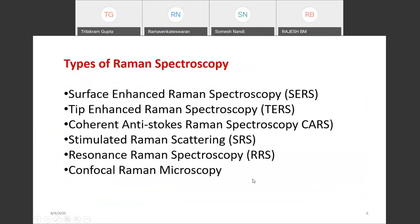There are a few types of Raman spectroscopy. One is surface-enhanced Raman spectroscopy, SERS, which offers orders of magnitude increase in Raman intensity, since the Raman signal is very weak. To enhance the Raman intensity, we use SERS. Then there is TERS — tip-enhanced Raman spectroscopy — which provides molecular information on the nanometer scale. It combines the sensitivity of SERS and scanning probe microscopy, giving chemical imaging of surfaces at the nanometer length scale.